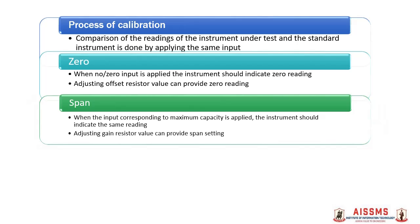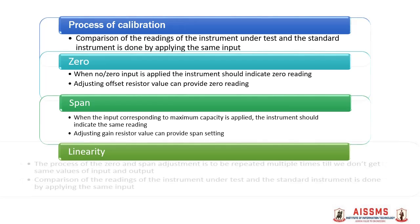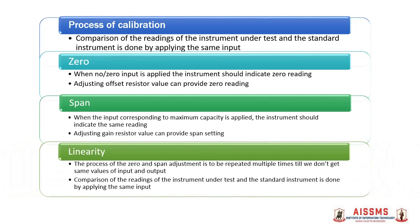When we apply the input corresponding to the maximum capacity of the instrument, it should indicate the same maximum value. If it is not showing the same reading, we need to adjust the gain resistor value to provide the span setting. This is the span adjustment. This process of zero and span adjustment is to be repeated multiple times — at least three times — until we get the same values of input and output.